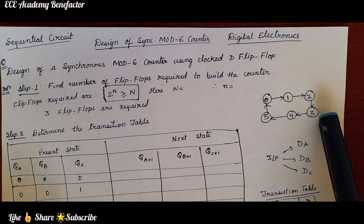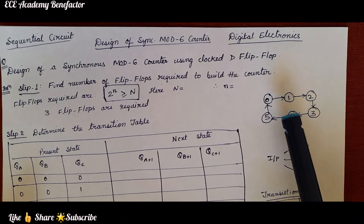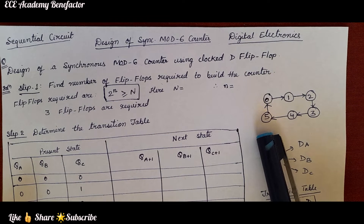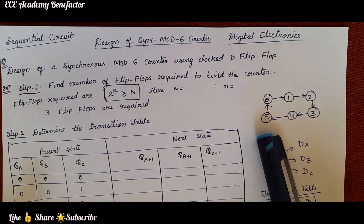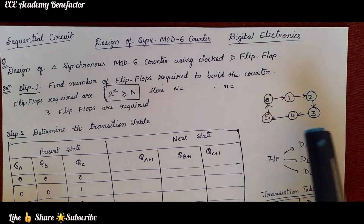After drawing the state diagram, we need to know how many flip-flops are required. In this state diagram, the largest number is 5, and we can represent 5 as 101. So 101 means 3 bits are required for representing 5 here.